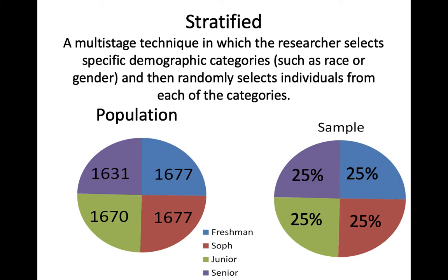For example, if a researcher is doing a study in a high school where there are approximately equal numbers of freshmen, sophomores, juniors, and seniors, they want their sample to have an equivalent proportion of each class. What they would do is divide their population into these four strata and then use a random sampling technique within each stratum, making sure to end up with equal proportions of freshmen, sophomores, juniors, and seniors, because that's essentially the breakdown in the population.